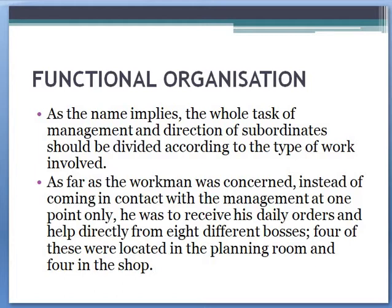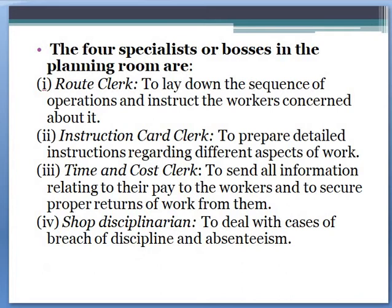According to F.W. Taylor, for an organization there should be a specialist — an individual who possesses certain qualities. He should have eight qualities. However, it is difficult to find all these qualities in one person. So what has been done here is that the work is divided into the production department and the planning department. F.W. Taylor follows the principles of scientific management, wherein he divided the managers or specialists into two parts: planning and production.